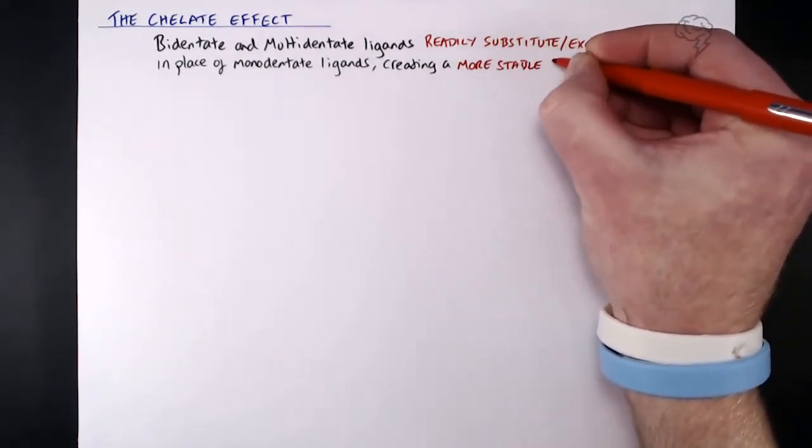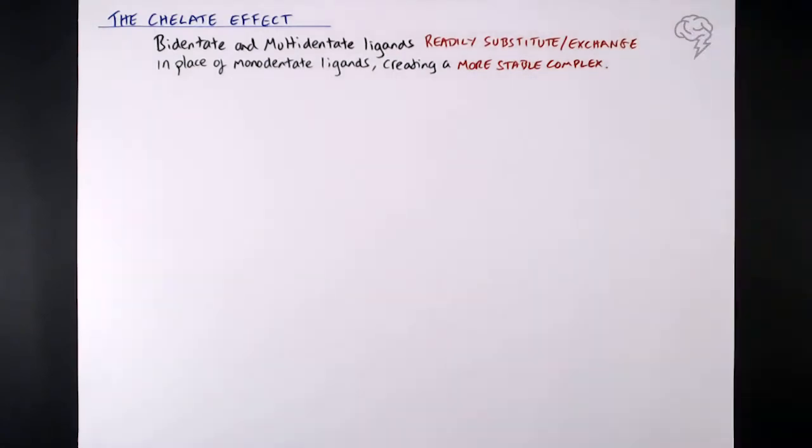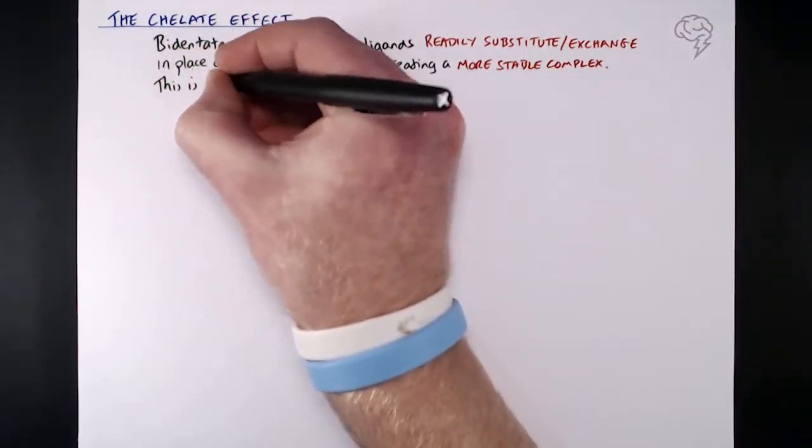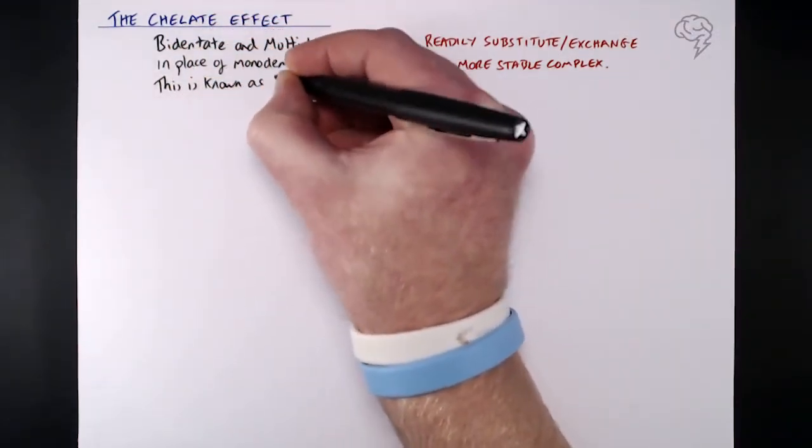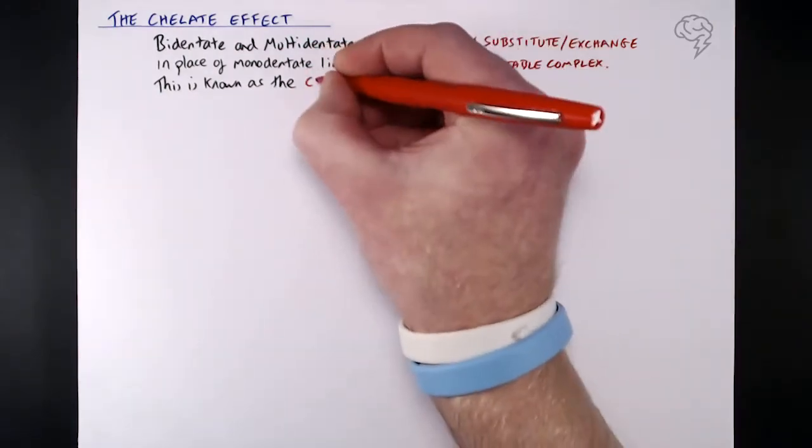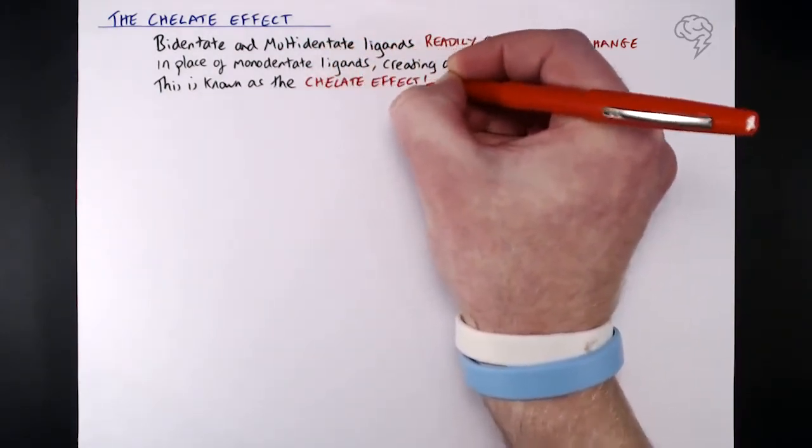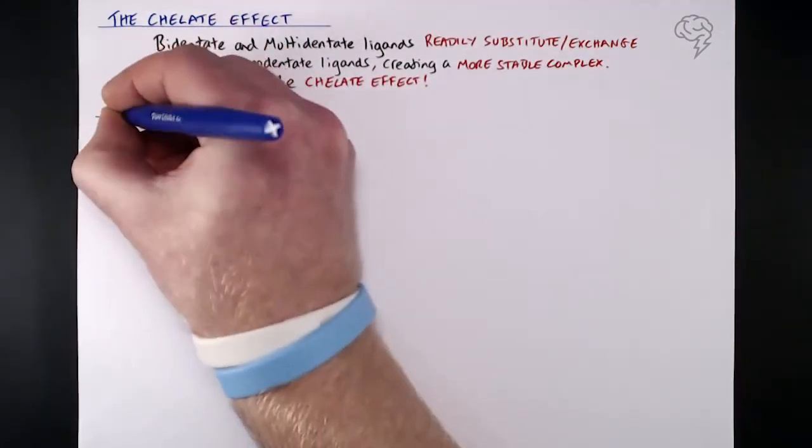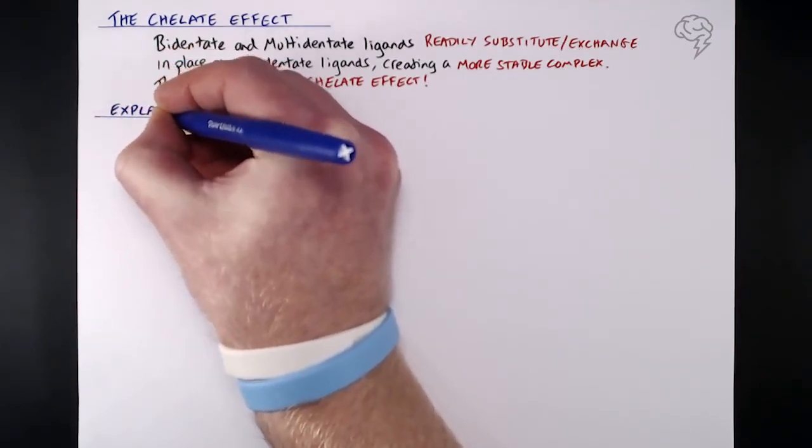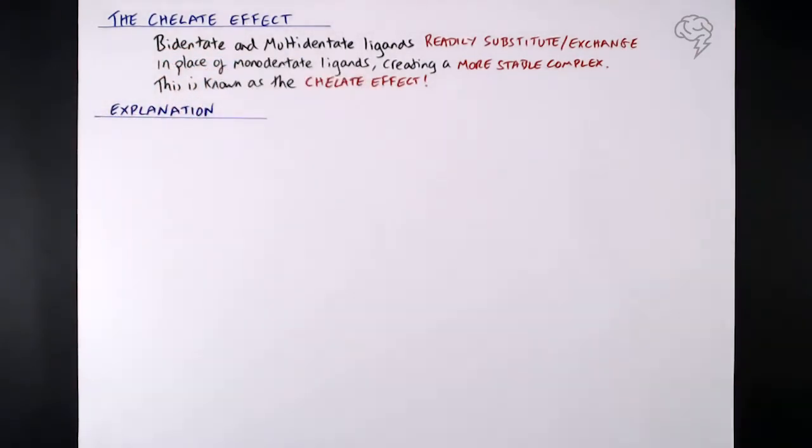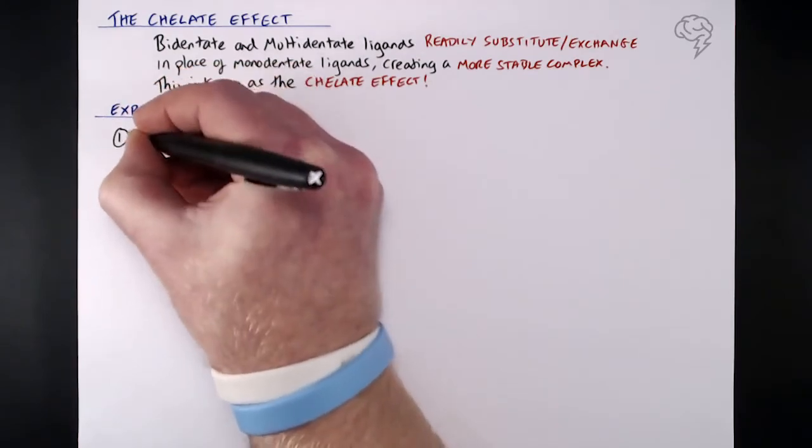This creates a more stable complex, we've got to talk about stability here. So this is what's known as the chelate effect, where bidentate and multidentate ligands exchange in place of monodentate ones because it creates a more stable complex. So that's the fact, that is the chelate effect. So of course what we need to do is explain it.